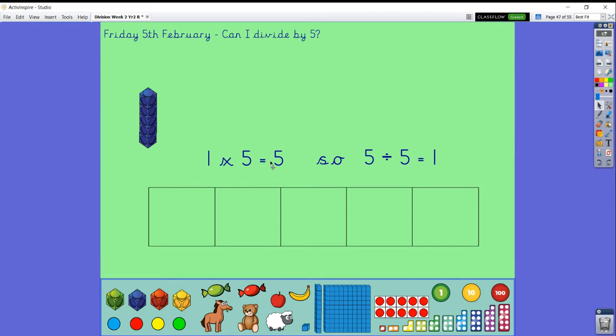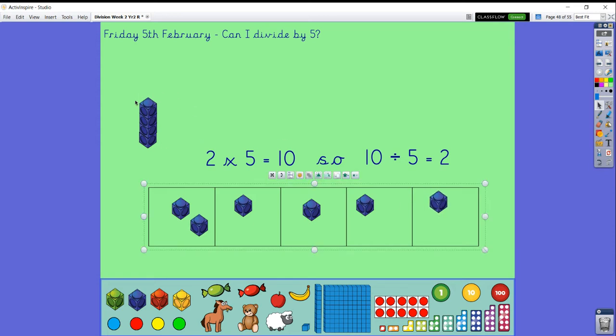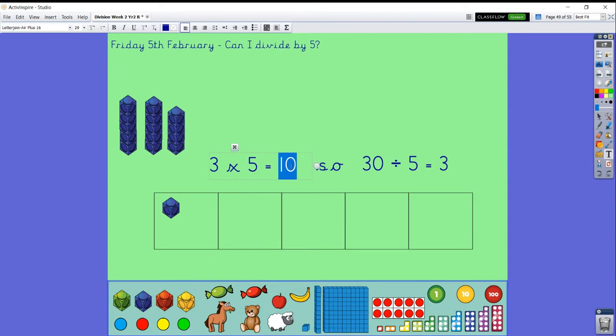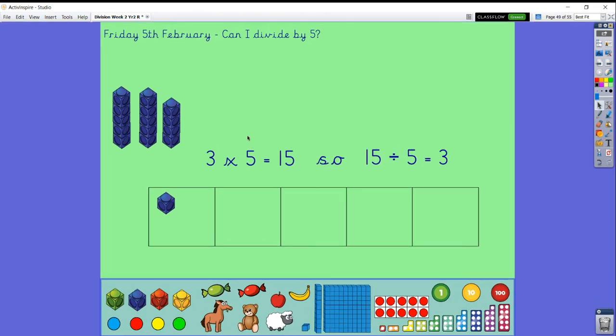So we know that one times five is five. If I divide my group of five out, I can see that five shared between five is one. I know that two groups of five is ten. So ten shared between five gives me two. Can you guess what three groups of five is? Do you know what three groups of five is? Can you tell me what it is if I divide it? Let's have a look. So here are my three groups of five. Three groups of five is fifteen. So fifteen shared between five is three. What a silly mistake I was making.